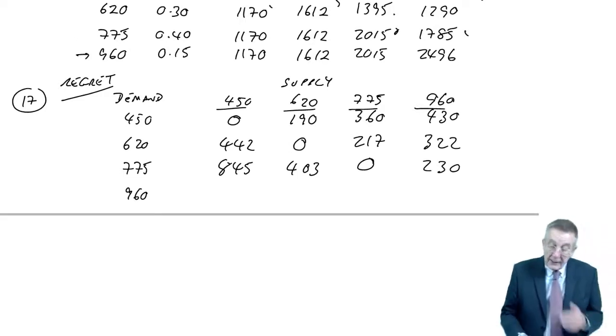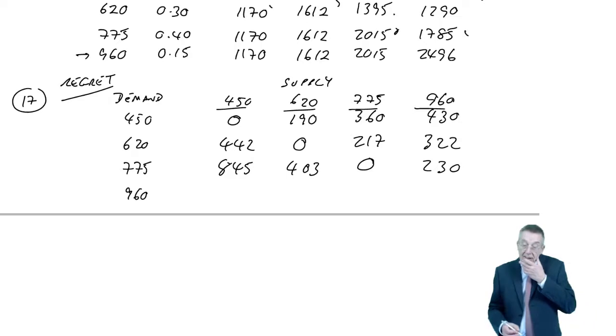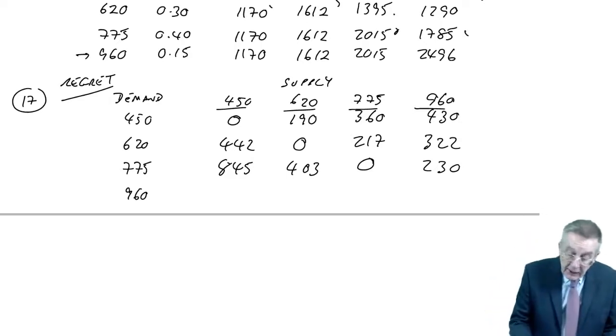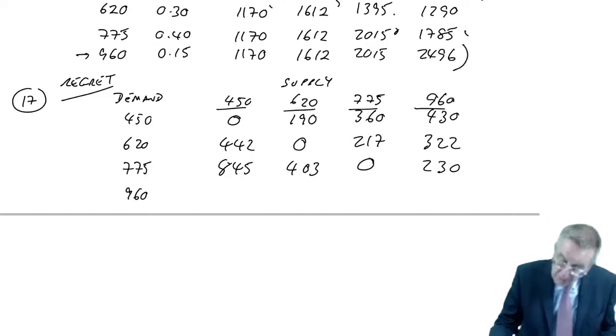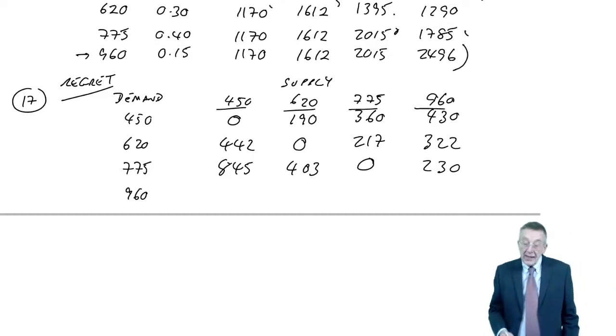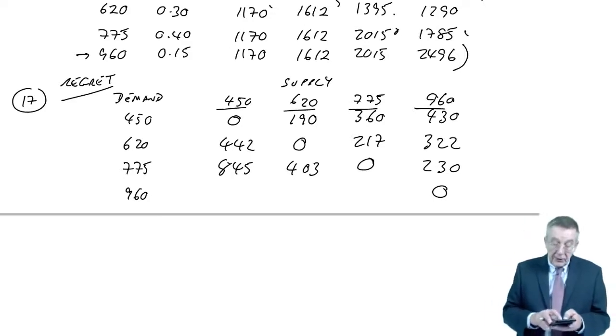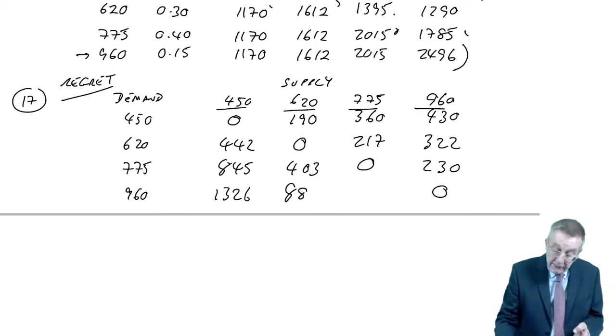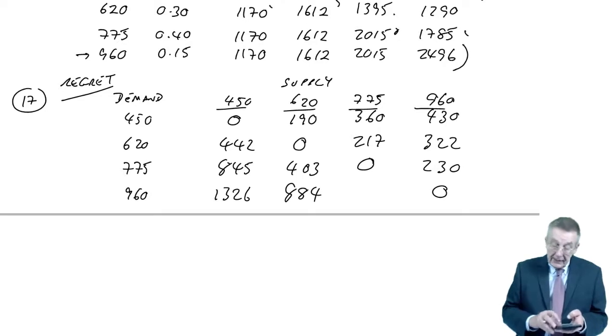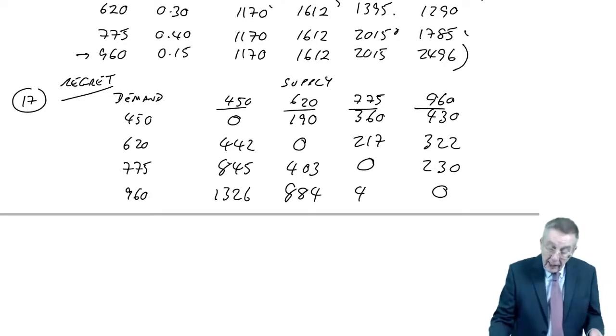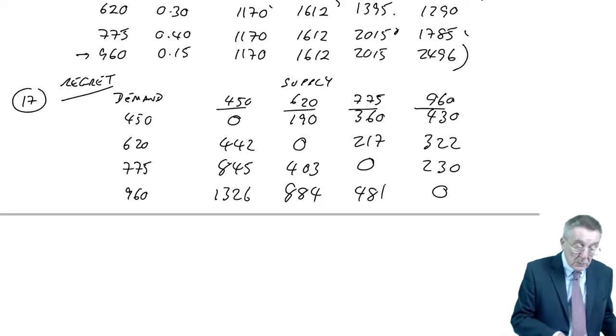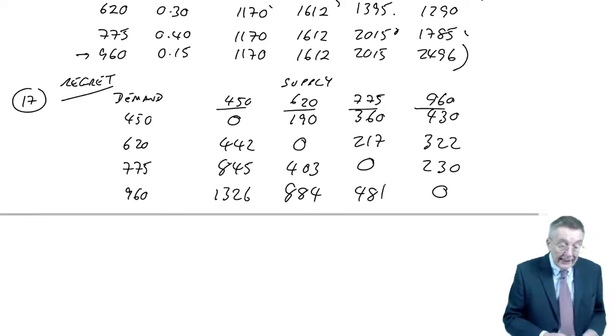And finally, the last one. If it had been 960, that would have been the best action to get 2496, no regret. The others compare with 2496. 2496 minus 1170 is 1326. 2496 minus 1612, 884. 2496 minus 2015, 481. So there we are. There is our regret table.